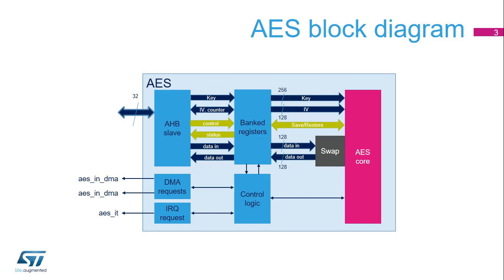The AES block is an AHB slave. Either the CPU passes the data, key and initialization vector to the AES block by writing to memory-mapped registers and gets the result by reading registers, or data movement can be ensured by two DMA channels — one for writing data to the AES, the second to read the result. Software can suspend a message if the AES needs to process another message with a higher priority, then resume the original message.